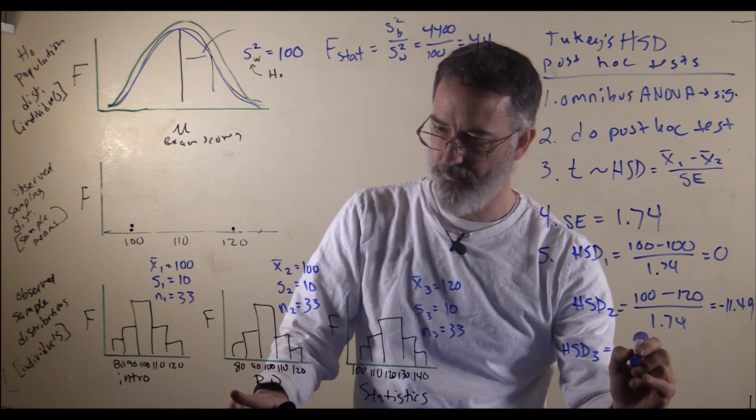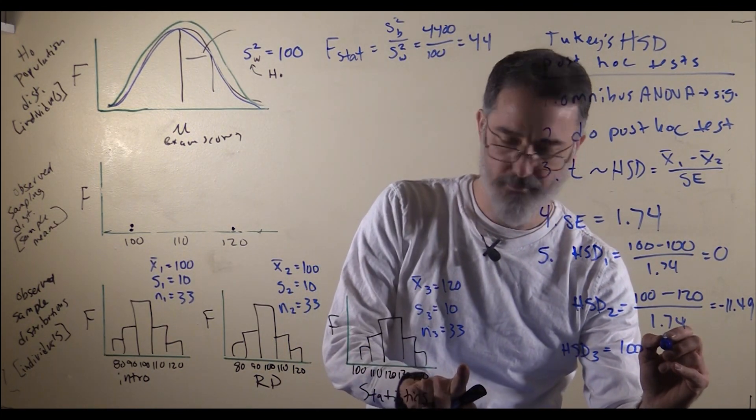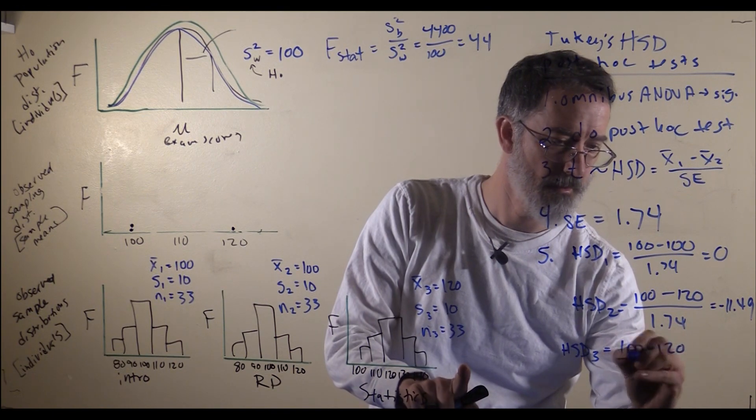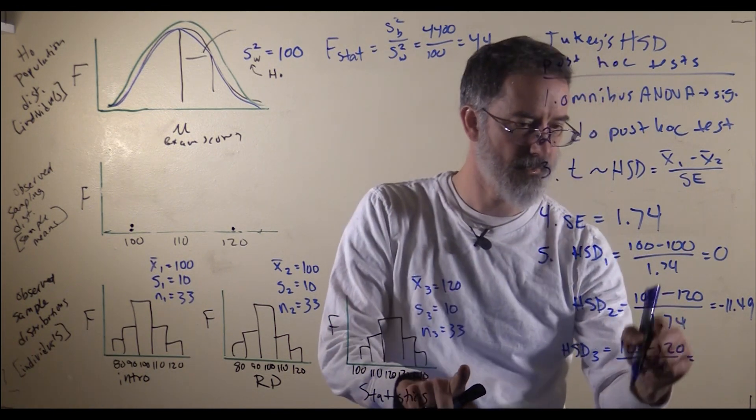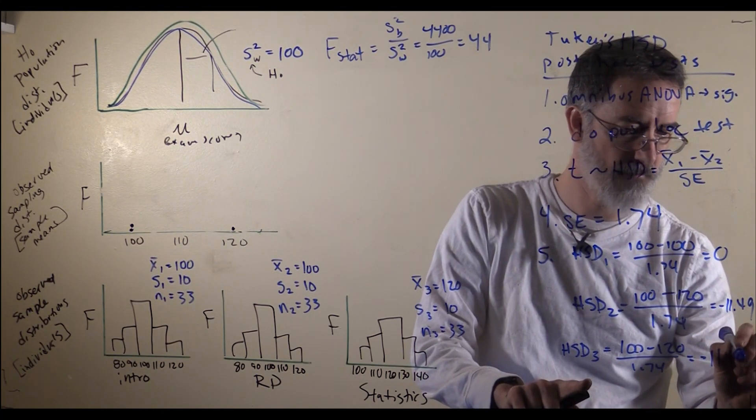Then we need our third pair. That is going to be the research design class minus the statistics class divided by 1.74. This is the same as it was earlier, so we are now getting the same result here, negative 11.49.